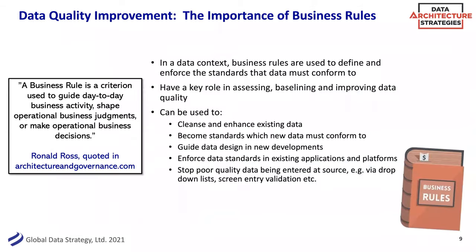Moving on, I'm going to pass it over to Nigel, who's going to dig into this business rules aspect of data quality. Thanks, Donna. We're going to focus today on business rules and particularly the role they play in two stages of that E2E methodology: the baselining of data, and developing improvements. The key questions that come up are: how do we baseline the data we've got, how do we know how good it currently is, and what do we measure it against? Because if you measure something being good, you have to measure it against some sort of benchmark or threshold.